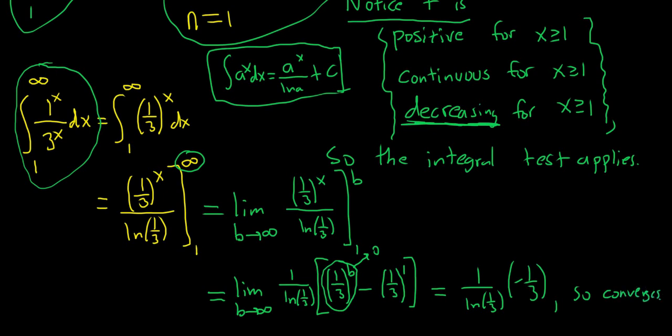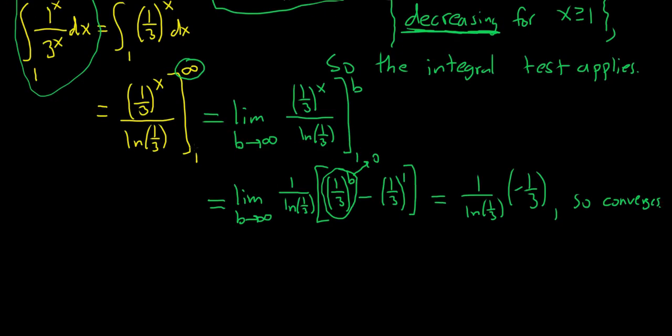So the integral converges. Therefore, by the integral test, our original series also converges. I'll use the three dots. That means therefore. Therefore, our OG, OG means original, series, converges by the integral test.